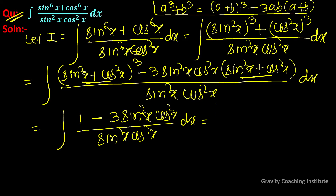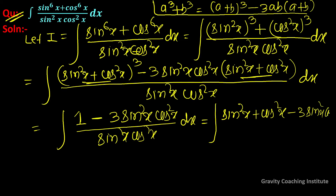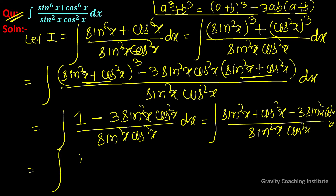So equal to integration, और हम इस 1 की जगह लिखते हैं (sin²x + cos²x), तो numerator बनेगा: (sin²x + cos²x - 3sin²x·cos²x) upon sin²x·cos²x dx.